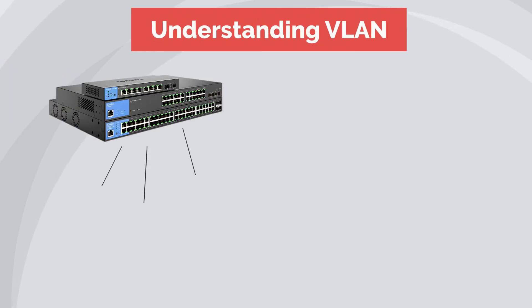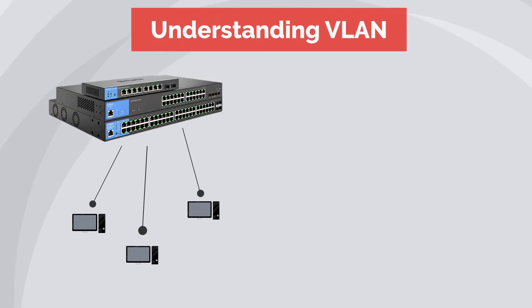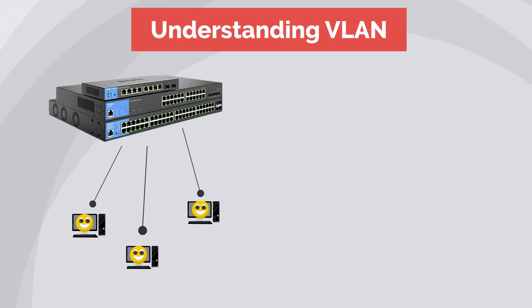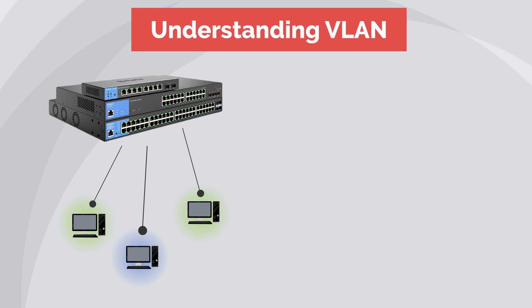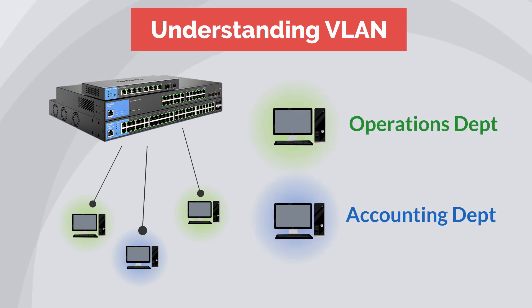Let's assume that the computers are connected to the same network switch. Without implementing VLAN, all these three computers will be able to communicate with each other, which is all good if all of them belong to the same department. But we all know that it is hardly true in an actual organization. Chances are, one or two of the computers connected to the switch may belong to a different department.